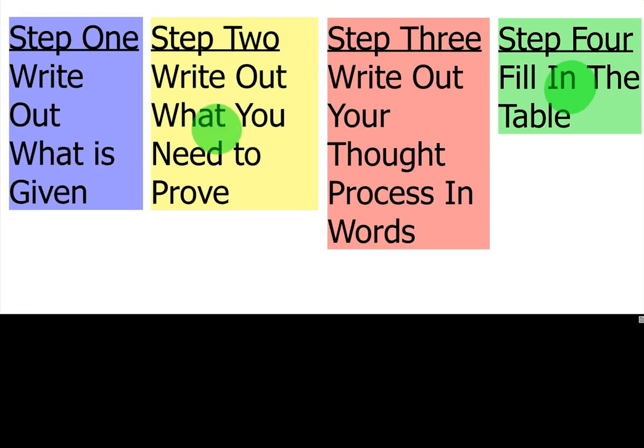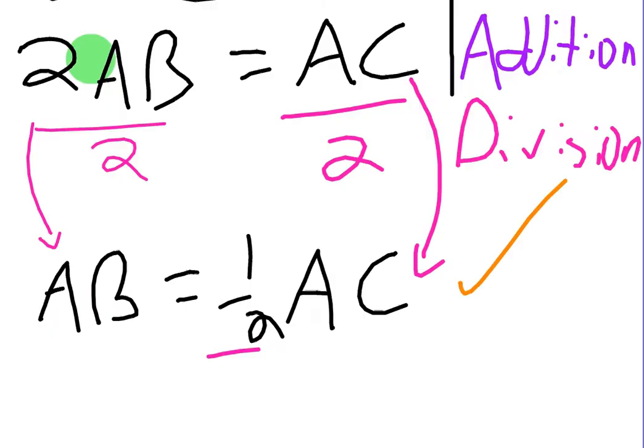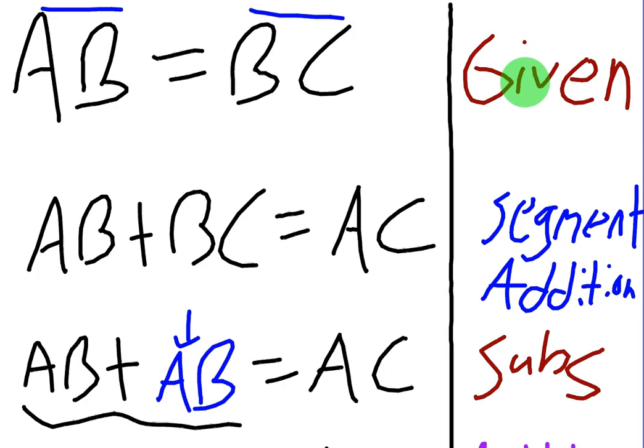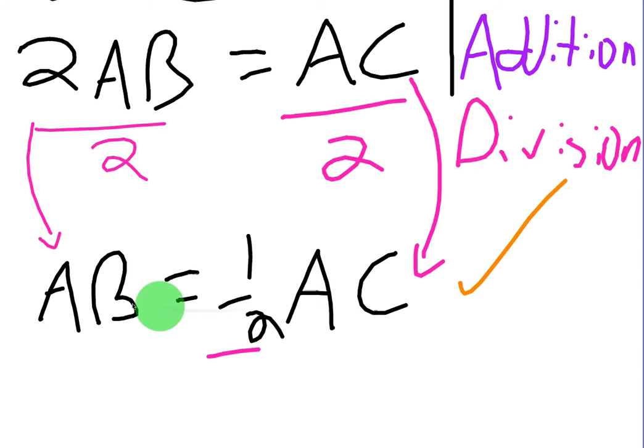All right, it says write out what you need to prove. Okay, so somewhere at the bottom here, we're just going to, at the bottom of the proof, we're going to write out what we need to prove. Okay, so here's the bottom of our proof. We need to prove that AB is half of AC. So basically what I did was I just took the wording and I wrote it as a math expression. AB is half the size of AC. The way you would write that is just like this. AB equals one half of AC.